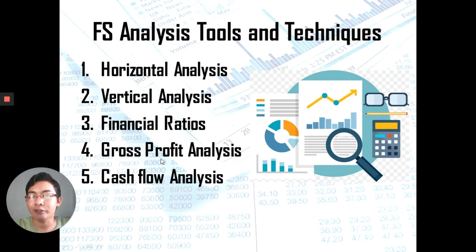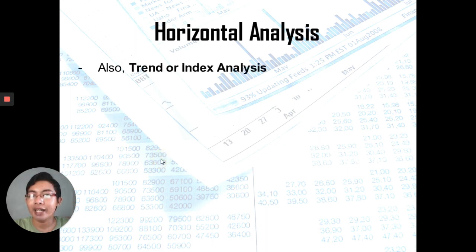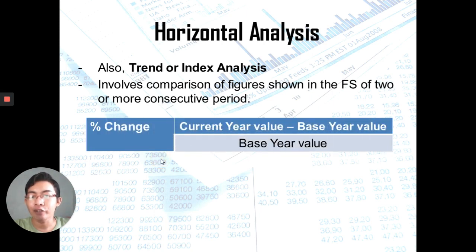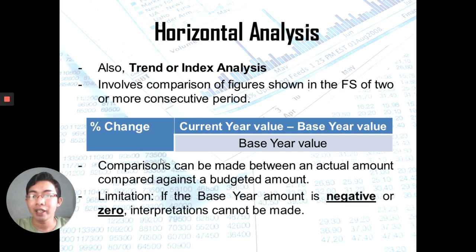We will not cover Gross Profit Analysis and Cash Flow Analysis. Now let's go with Horizontal Analysis. When we say Horizontal Analysis, it is also known as Trend or Index Analysis. It involves the comparison of figures shown in the financial statements of two or more consecutive periods. The formula to compute the change is: current year value minus base year value, all over base year value. It compares the actual amount with the budgeted amount, or you can compare two actual amounts — the last year figure and the current year figure. However, a limitation of Horizontal Analysis is that if the base year is zero or negative, interpretations cannot be made.